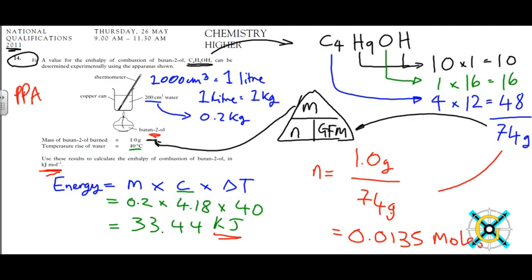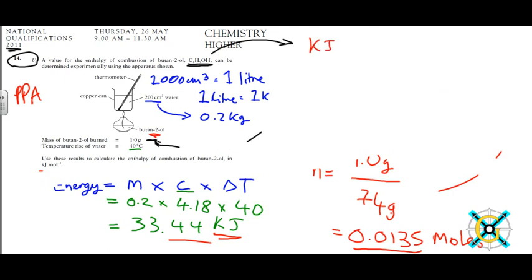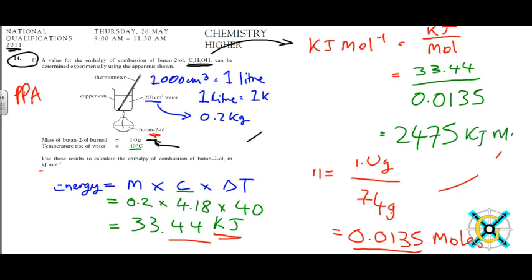So now what we need to do is we need to divide the energy by the moles to get kilojoules per mole. So we want the energy divided by the moles, which means it's equal to 33.44 divided by 0.0135, which is equal to 2475 kilojoules per mole.